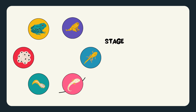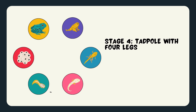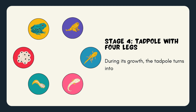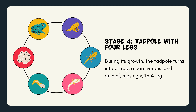Stage 4: Tadpole with four legs. During its growth, the tadpole turns into a frog — a carnivorous land animal, moving with four legs and breathing with lungs.